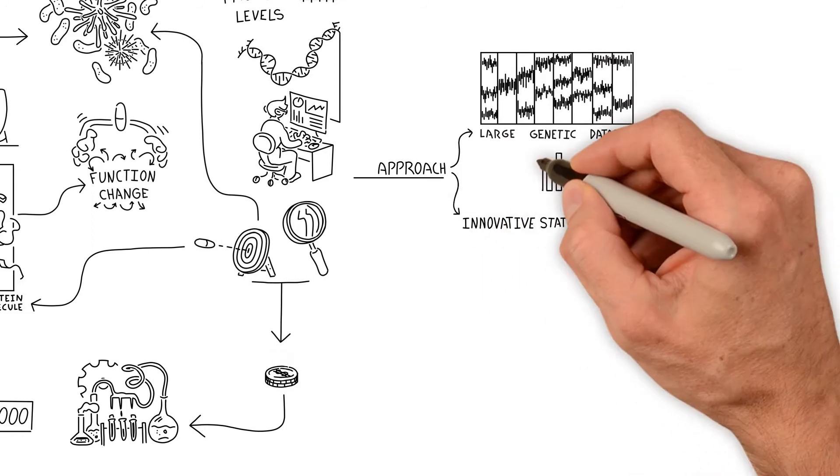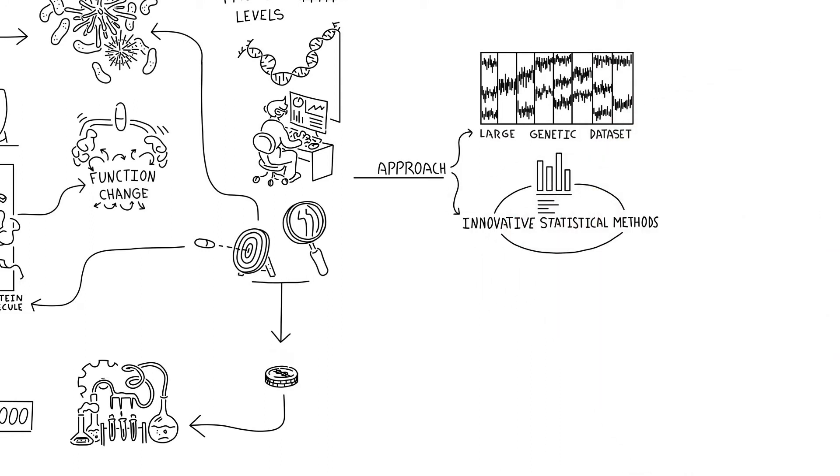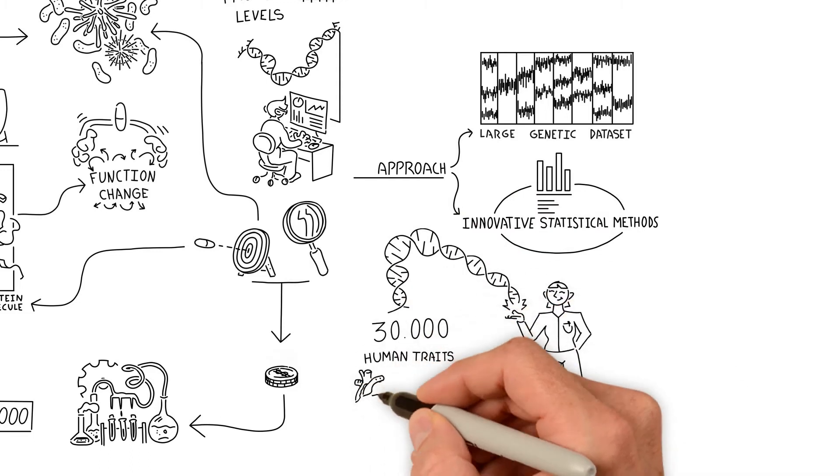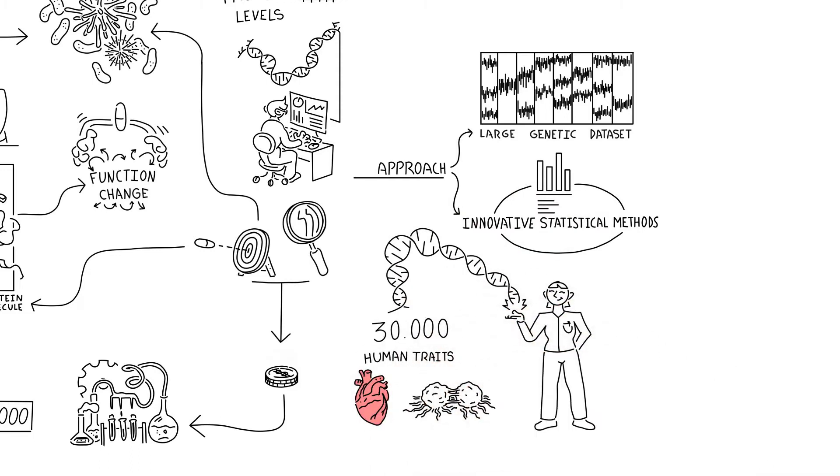Researchers in our unit have compiled a database of genetic variants linked to over 30,000 human traits including cardiovascular diseases and cancers.